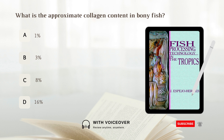What is the approximate collagen content in bony fish? A. 1%, B. 3%, C. 8%, D. 16%. Answer: B. 3%. The approximate collagen content in bony fish is 3%.